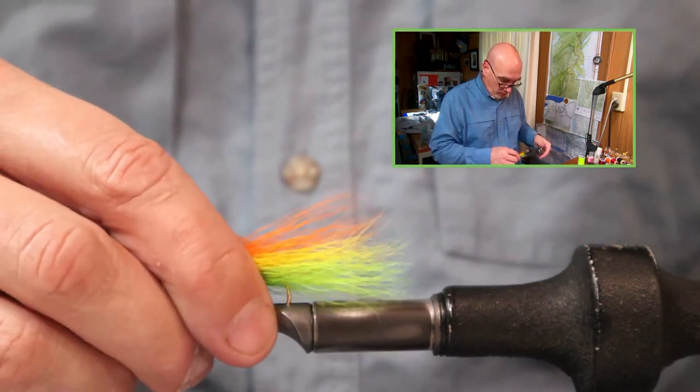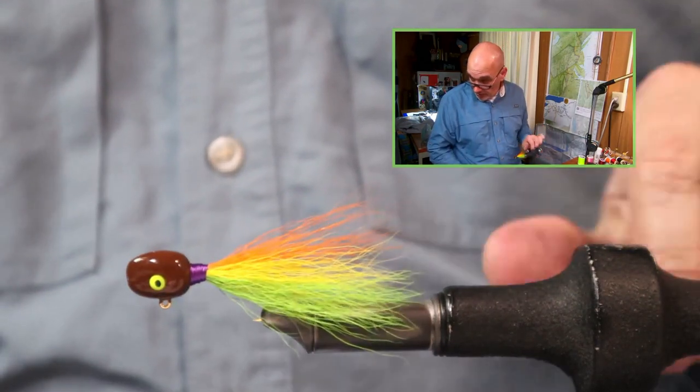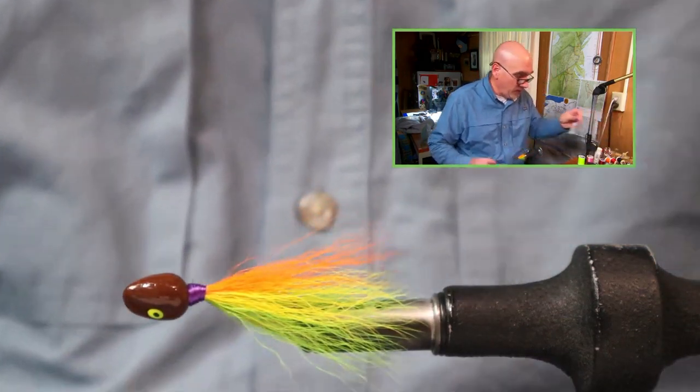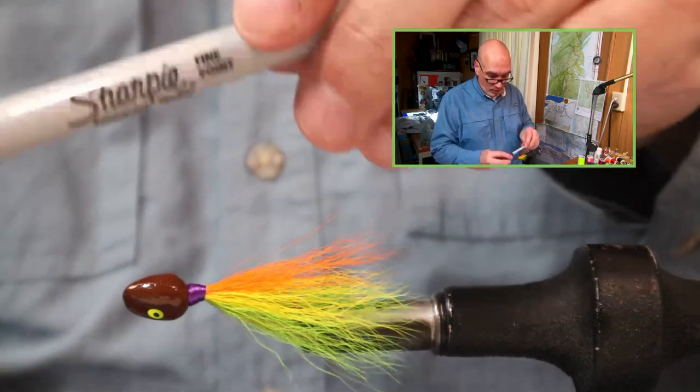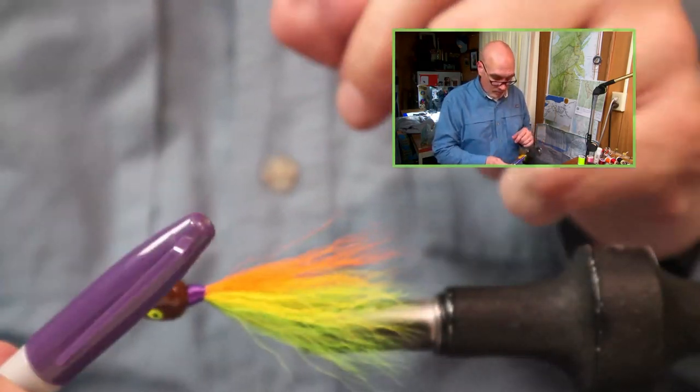Here we are with our fire tiger pattern. Now I use a purple thread for the collar and I like to copy that so I'll go with Sharpie fine point permanent but this one's purple.